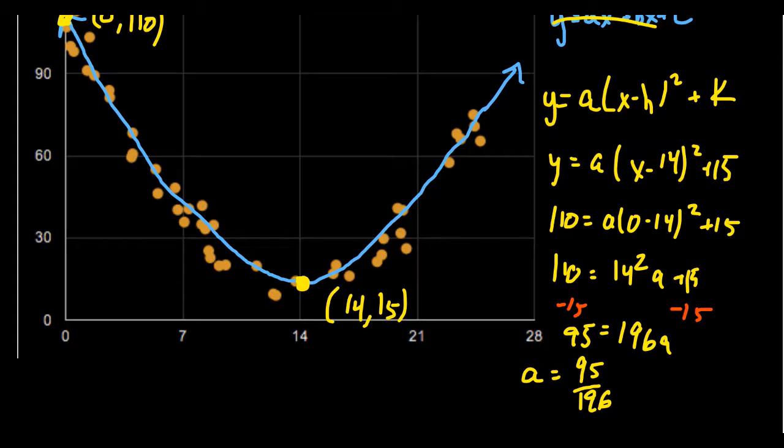I'm just going to leave it as a fraction here. So we get y equals 95 over 196 times x minus 14 squared plus 15. And so this right here gives me an equation for the parabola.